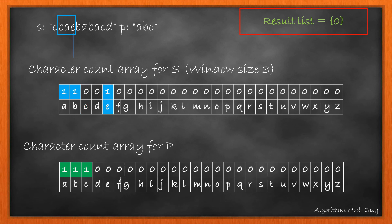We have our next window. For this, we again increment the count of character at current index and compare the updated array with the array for P. As these are not equal, we move ahead without updating the result list. But before moving the window ahead, we decrement the count for start element in the array.